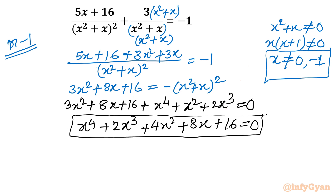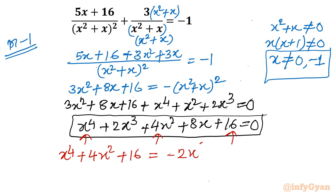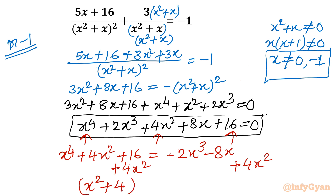Now I will consider the algebraic method. I will group certain terms: taking x⁴ + 4x² + 16 to one side, and the remaining terms minus 2x³ minus 8x to the right-hand side. I will add 4x² to both sides. The left-hand side becomes x⁴ + 8x² + 16, which is (x² + 4) whole square. On the right-hand side, I consider 4x² plus the remaining terms.